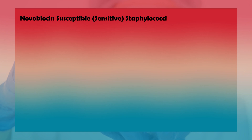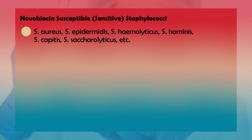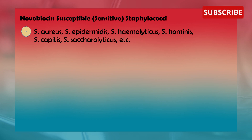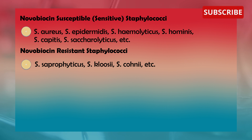Novobiocin-susceptible (sensitive) staphylococci include: Staphylococcus aureus, Staphylococcus epidermidis, Staphylococcus haemolyticus, Staphylococcus hominis, Staphylococcus capitis, and Staphylococcus saccharolyticus, among others. Novobiocin-resistant staphylococci include: Staphylococcus saprophyticus, Staphylococcus cohnii, and Staphylococcus kloosii, among others.